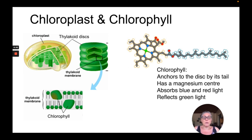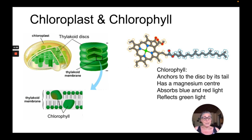Because chlorophyll is a pigment, it's going to absorb blue and red light. White light from the sun is made up of blue, red, and green. Because the pigment is green, it absorbs the blue and red light and reflects green light, because that is what we see — green is being reflected back into our eyes.